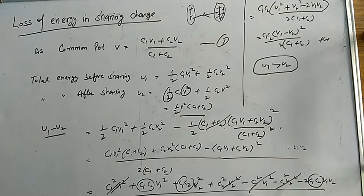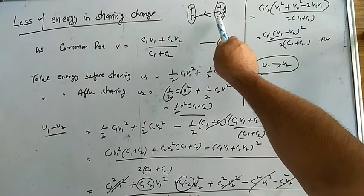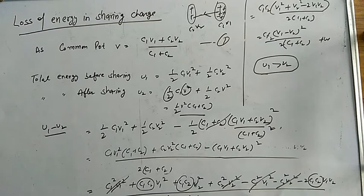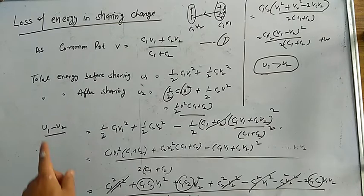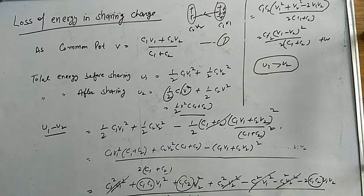Next topic: loss of energy in charge sharing. When two capacitors of capacities C1 and C2 with different potentials V1 and V2 are connected, charge flows from higher to lower potential until they reach a common potential. There is no loss of charge, but is there a loss of energy? Yes — there will definitely be a loss of energy. The cause is heat produced when charge flows. We want to calculate this energy loss.